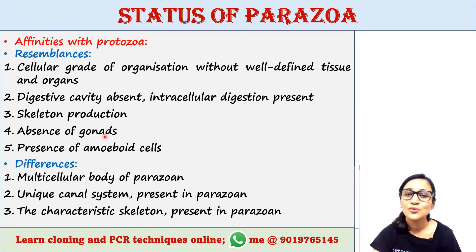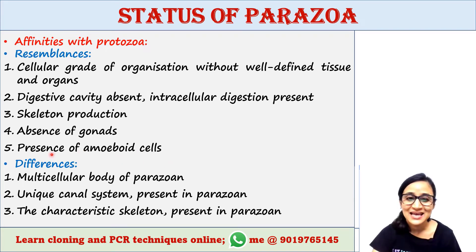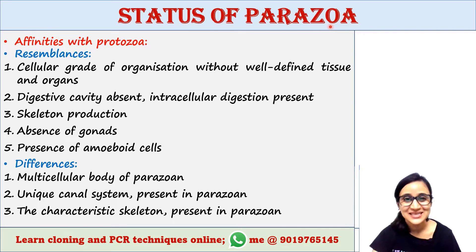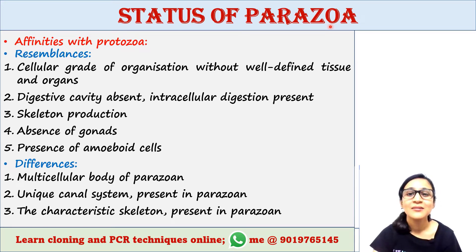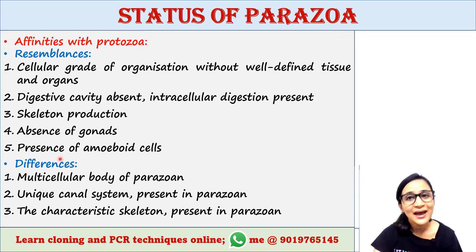Both Protozoa and Parazoa produce skeleton. Gonads or reproductive organs are absent in both. Amoeboid cells are present in both — these are amoeba-like cells. In Parazoa, amoeboid cells have two functions: they engulf and digest food, and they secrete a material that helps keep the sponge flexible.